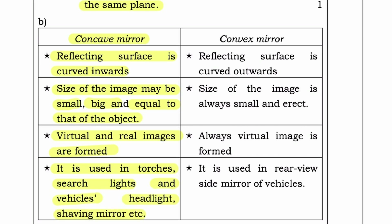Convex mirror: reflecting surface is curved outwards; size of the image is always small and erect; always a virtual image is formed; it is used in the rear-view side mirrors of vehicles.